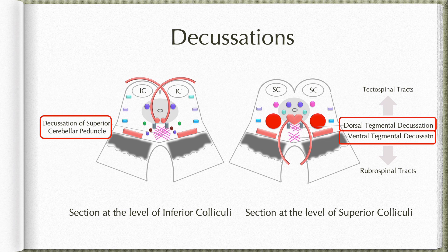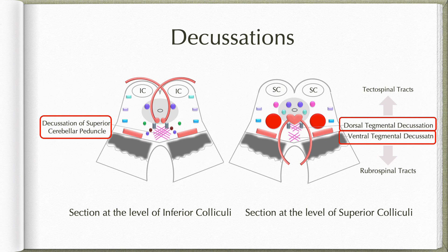This fiber bundle is involved in controlling voluntary movements; the fibers in this tract facilitate flexors and inhibit extensors. Remembering which fibers decussate in the dorsal versus ventral tegmental decussation is simple: the superior colliculus is more dorsally placed, so its fibers decussate in the dorsal tegmental decussation. The red nuclei are located more ventrally, so their fibers decussate in the ventral tegmental decussation. After decussating at the level of superior colliculi, they form the definitive tracts, which can be seen from the level of inferior colliculi downward — including the tectospinal and rubrospinal tracts visible in the cross-section.